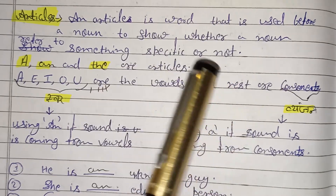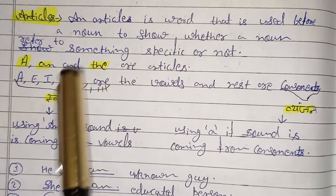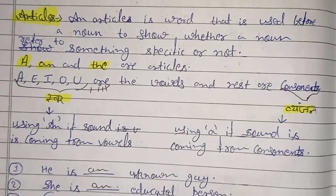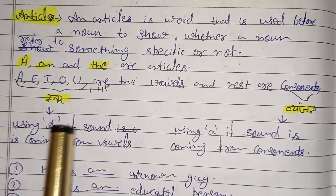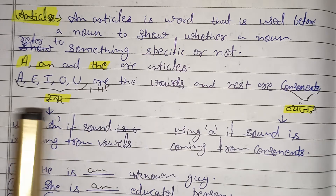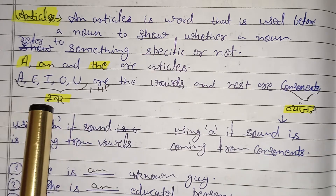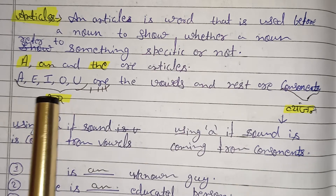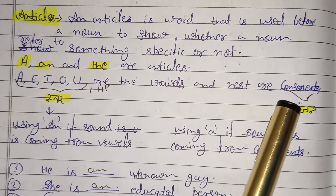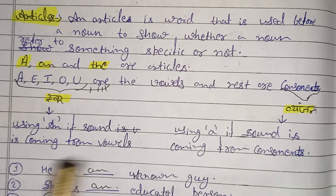Basically, these are used before the noun, and they tell whether the noun is special or not. There are some vowels called A, E, I, O, U, and the consonants are called Vyajan.